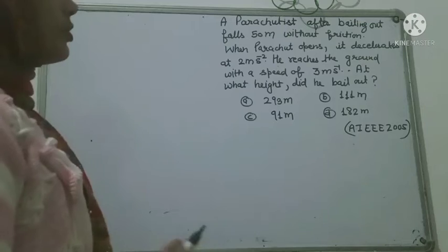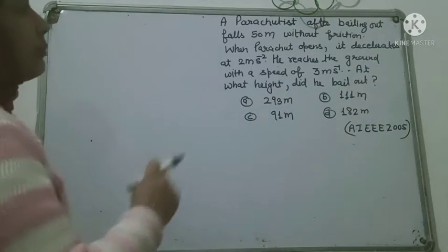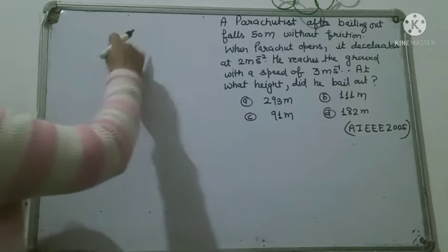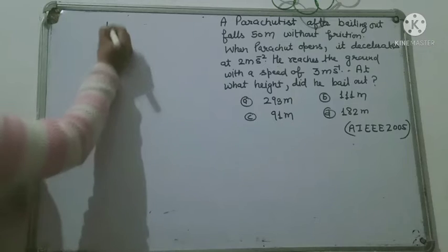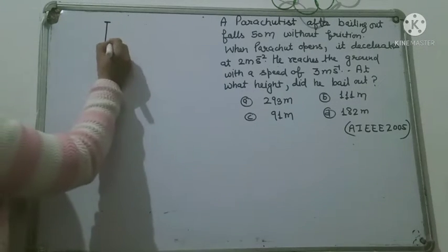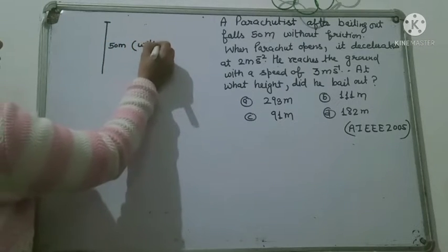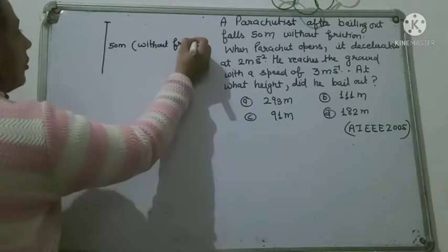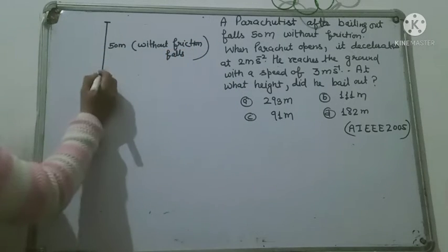देखें, पहले हम question को understand करते हैं कि जो parachutist था, bailing out करने के बाद वो 50 meter without friction fall कर गया. जैसे यह aircraft में से parachutist नीचे आया, तो यहाँ से यहाँ तक — मानो यहाँ वो aircraft में से bail out किया था — यहाँ से यहाँ तक 50 meter without friction falls किया, ठीक है?